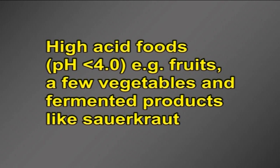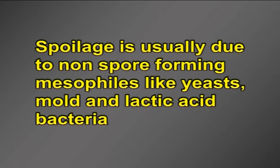High acid foods with a pH less than 4, for example fruits, a few vegetables and fermented products like sauerkraut, spoilage is usually due to non-spore-forming mesophiles like yeasts, mold and lactic acid bacteria.